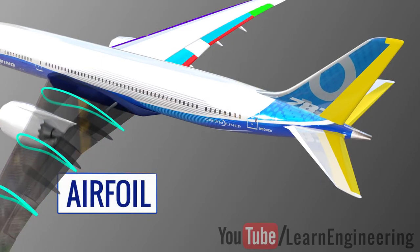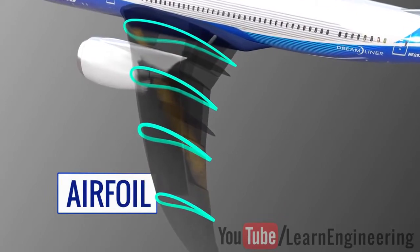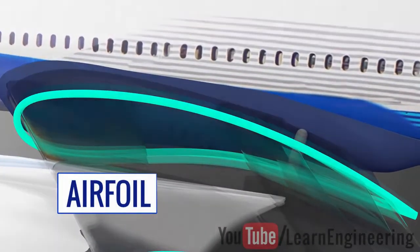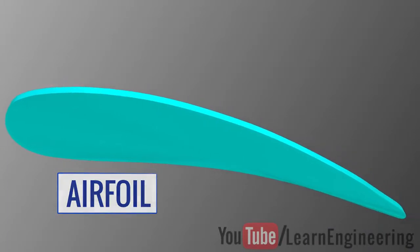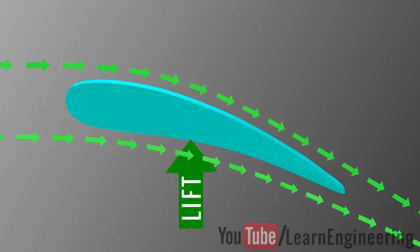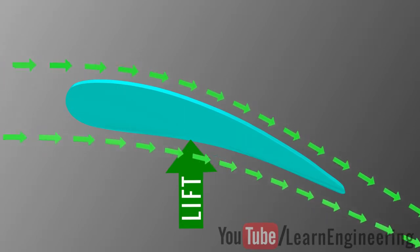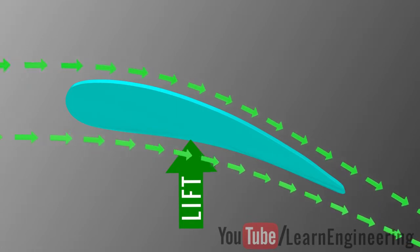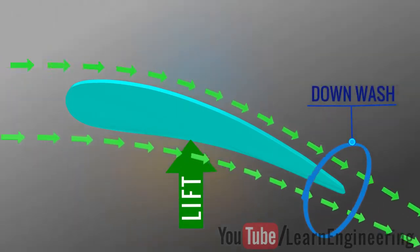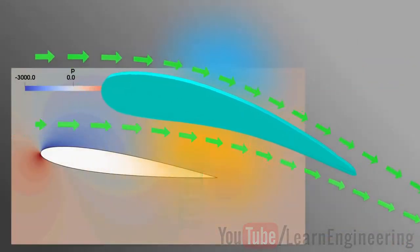Just by understanding the physics behind this simple shape, you can completely understand airplane physics. An airfoil produces a lift force when moved relative to the air, and this lift force makes an airplane fly. The airfoil produces a downwash, which causes a pressure difference at the top and bottom of the airfoil, and hence produces lift.